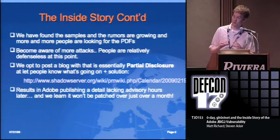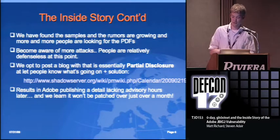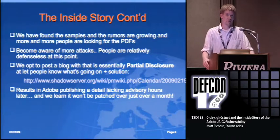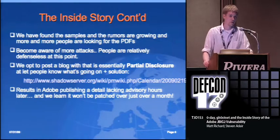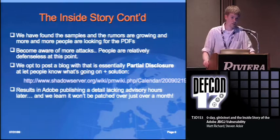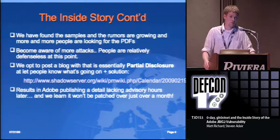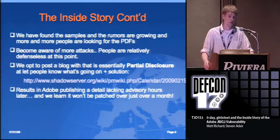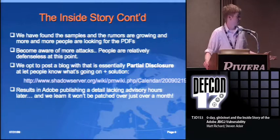We opted for partial disclosure on the Shadow Server blog - basically letting people know there's a vulnerability without mentioning the specific function or how to recreate the exploit, but giving them a solution: disable JavaScript. You could circumvent JavaScript - someone in Immunity or the Canvas framework created something that can do it. But to date, we have never seen an actual targeted exploit that actually used a method circumventing JavaScript, so this solution would work 100%. Another solution was having DEP enabled, which would pretty much stop the exploit - it would crash but not actually exploit the system.